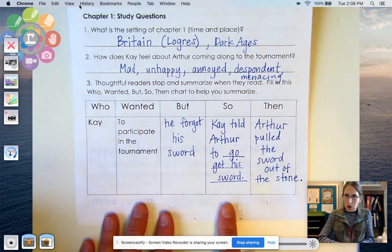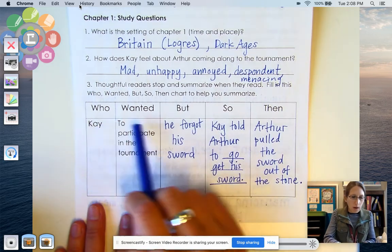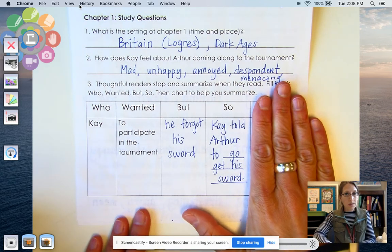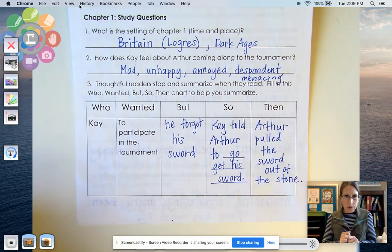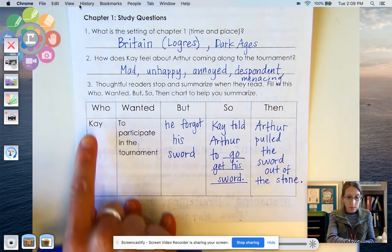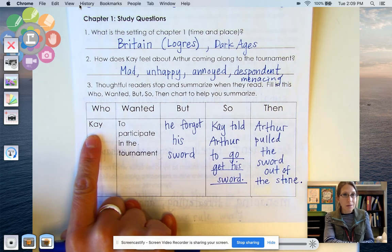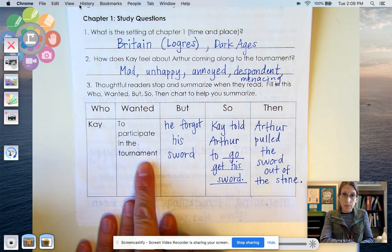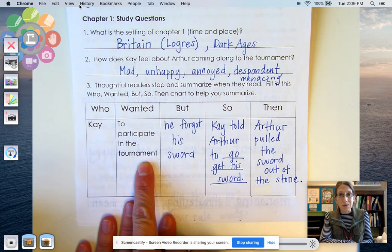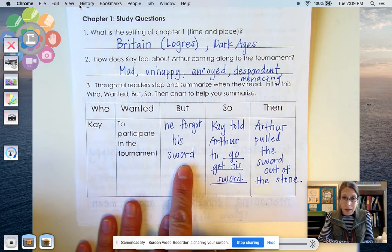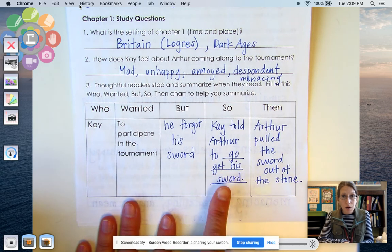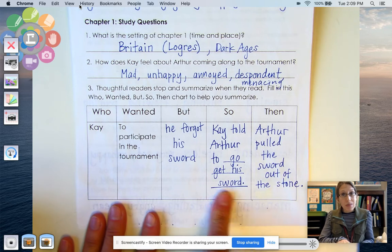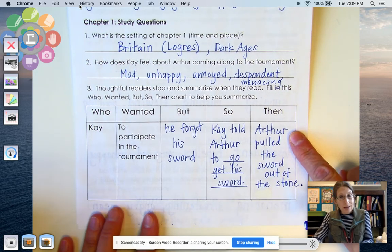So our packet looks like this. So if you would please get your King Arthur packet, we're just going to go through a little bit of what we talked about last time and what we worked on. All right, so we have this little chart that really helped us to summarize, and it's called a Who Wanted But So chart, but here we also have the Then. Sometimes it's just this kind of a chart. You may have seen this in History with Miss Lund. We just added a little column here. So what we read about so far is that the Who is Kay, and that is Arthur's older brother, and Kay wanted to participate in the tournament. Remember, Kay is now a knight, and he wants to go to this tournament. And Arthur convinced Kay and Hector to let him come along, remember? But Kay forgot his sword, so Kay told Arthur to go get his sword. He's like, I forgot my sword. Hey, Arthur, little brother, go and get one.